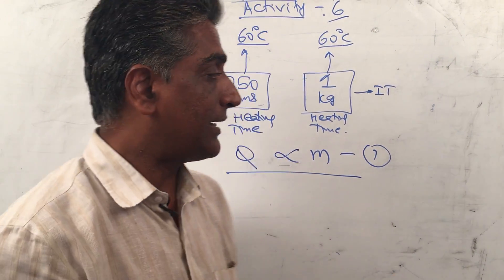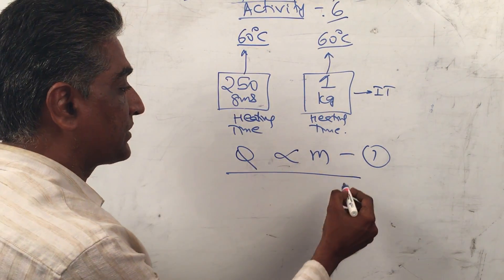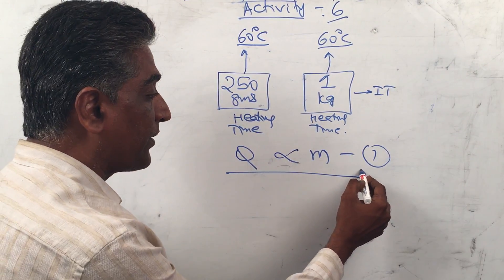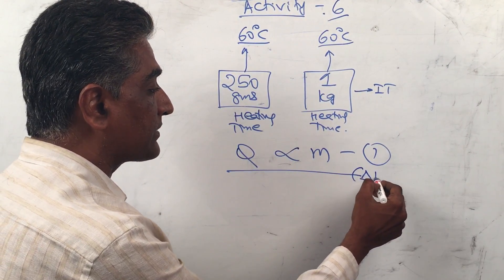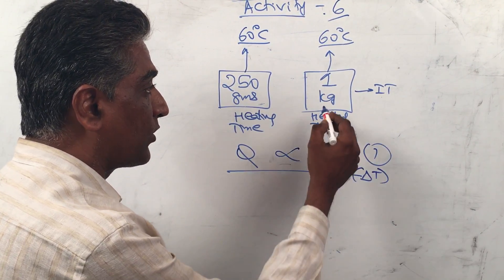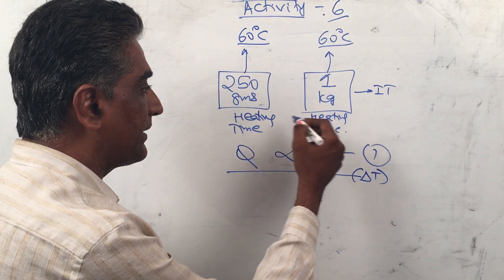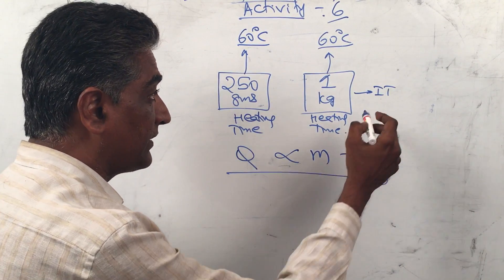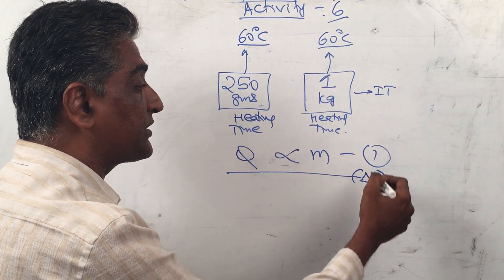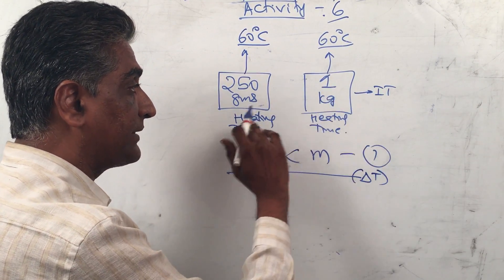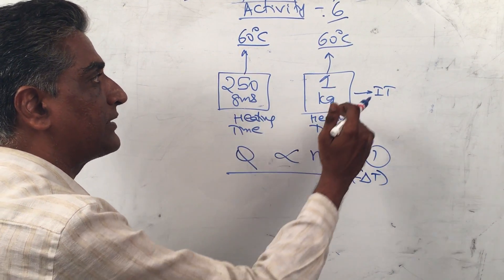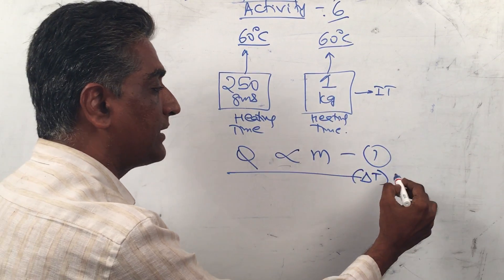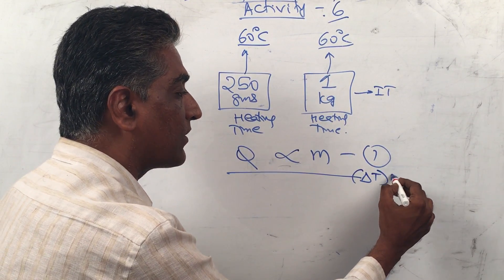This holds when delta T is constant. If delta T is constant, the heating times are different but the change in temperature is the same. Delta T is constant.